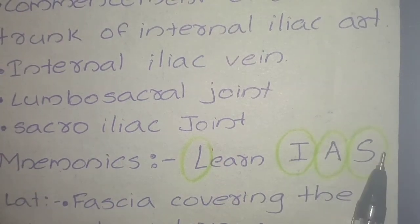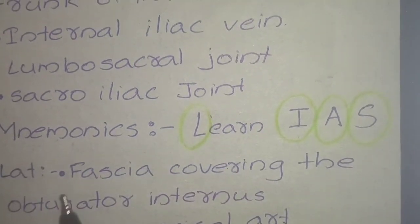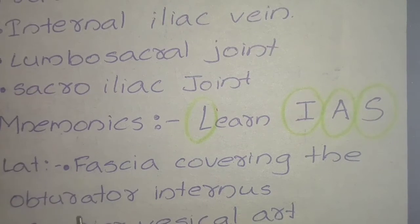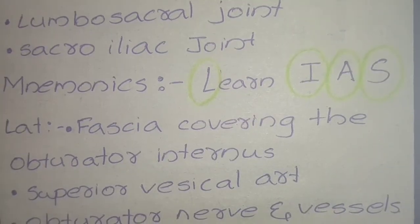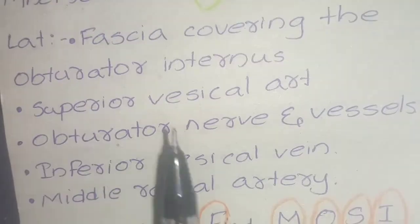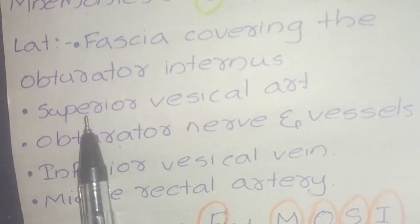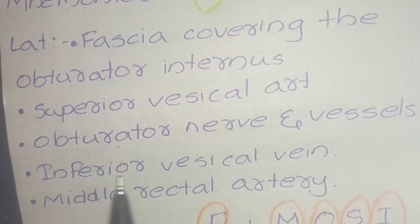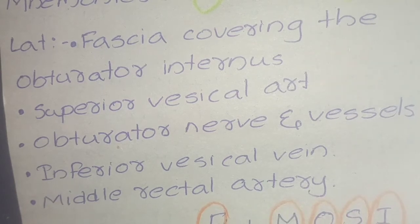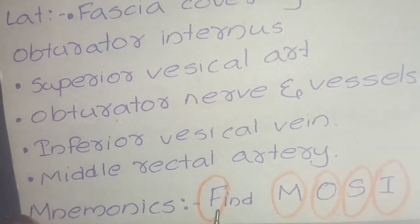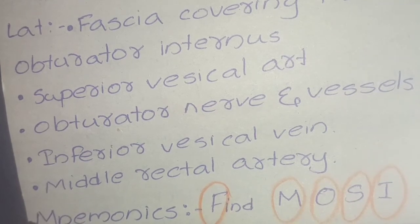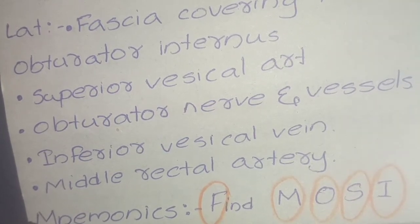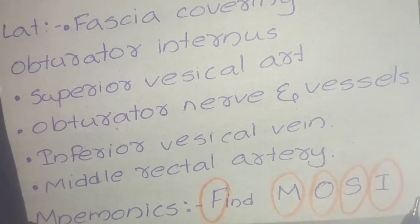Laterally, the pelvic ureter has relations with: the fascia covering the obturator internus, superior vesical artery, obturator nerve and vessels, inferior vesical vein, and middle rectal artery. The mnemonic to remember this is 'FMOSI': F for fascia covering obturator internus, M for middle rectal artery, O for obturator nerve and vessels, S for superior vesical artery, I for inferior vesical vein.